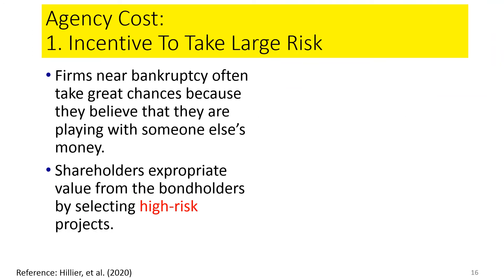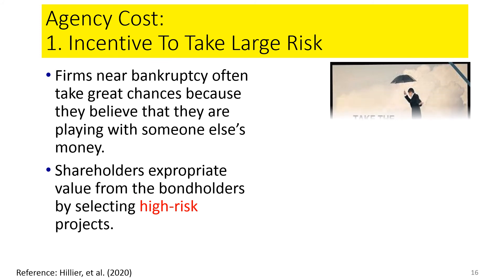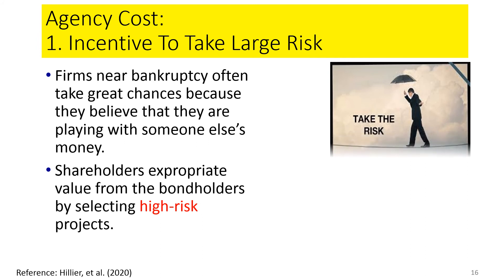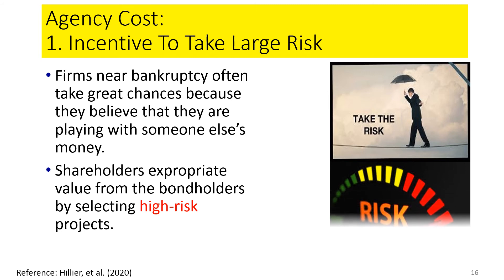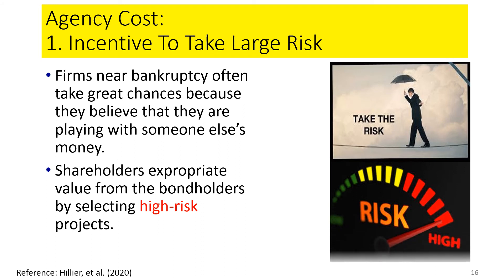Firms near bankruptcy often take greater chances because they believe they are playing with someone else's money. This means shareholders will select high-risk projects even if the net present value is lower. Shareholders expropriate value from bondholders by selecting high-risk projects. They are tempted to take larger risks since they have nothing to lose when financial distress has already occurred — shareholders have only residual claims on the assets of the firm.